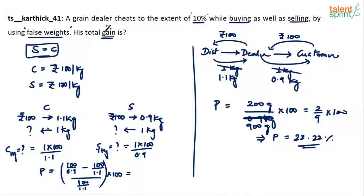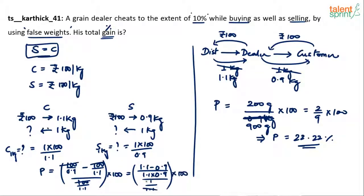Selling price minus cost price divided by cost price, multiplied by 100. That gives us (100/0.9 − 100/1.1) divided by (100/1.1), multiplied by 100. The 100s cancel, leaving (1/0.9 − 1/1.1) divided by (1/1.1), multiplied by 100. Simplifying: (1.1 − 0.9) / (1.1 × 0.9) divided by 1/1.1, multiplied by 100. The 1.1s cancel, leaving 0.2/0.9 × 100, which is 2/9 × 100 = 22.22%.